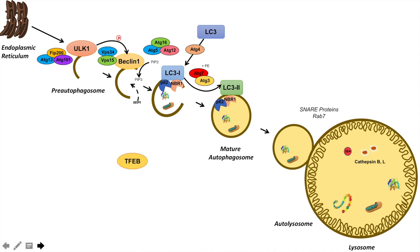The first transcription factor we'll talk about is TFEB. We've discussed how TFEB, along with other MiT-F family transcription factors such as MiT-F and TFE3, are regulated during a fed state — they are phosphorylated and bound to 14-3-3 protein, which prohibits them from entering the nucleus. But during fasting and starvation, TFEB becomes dephosphorylated and activated, allowing it to enter the nucleus and induce transcription of its targets.